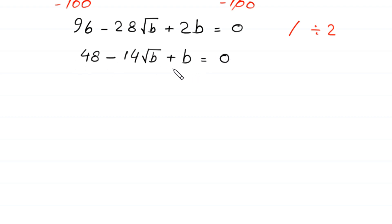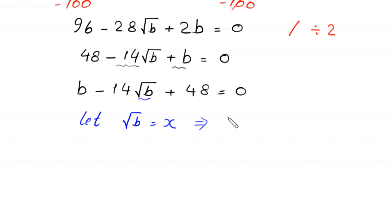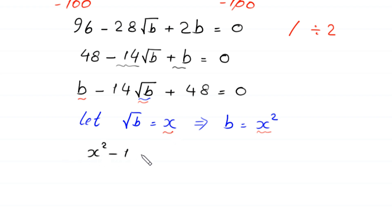We rearrange these terms, writing b first, then negative 14 times root b, plus 48 is equal to 0. Now suppose that root b equals x; if we square both sides, this implies b equals x squared. We replace b with x squared and root b with x, so this equation becomes x squared minus 14x plus 48 is equal to 0.